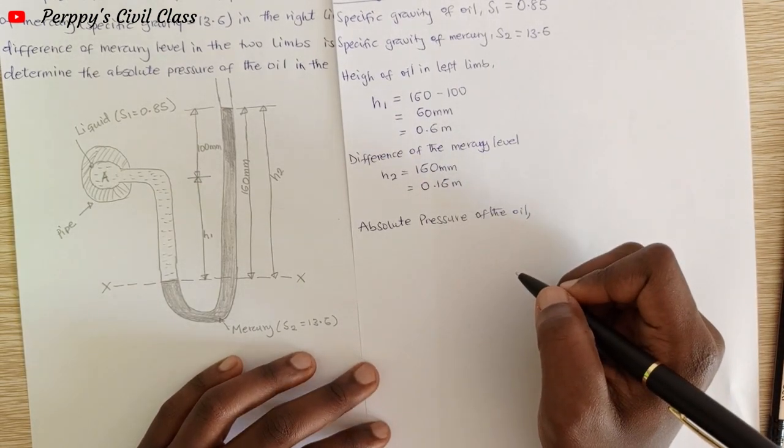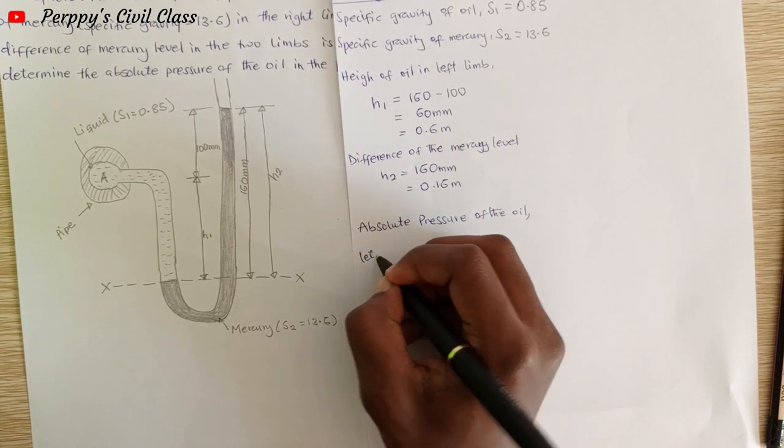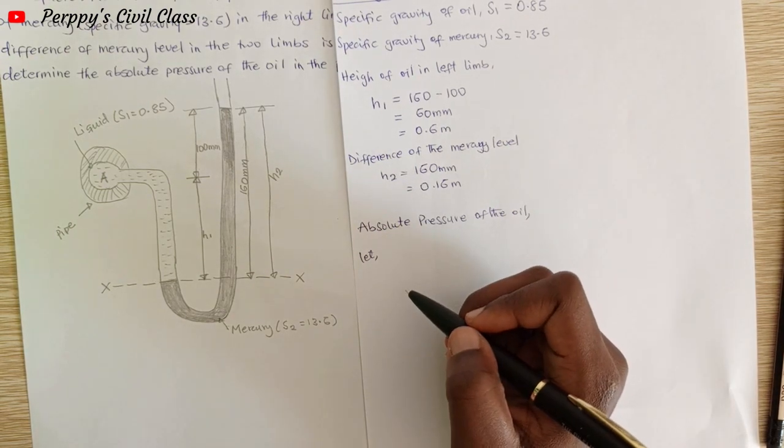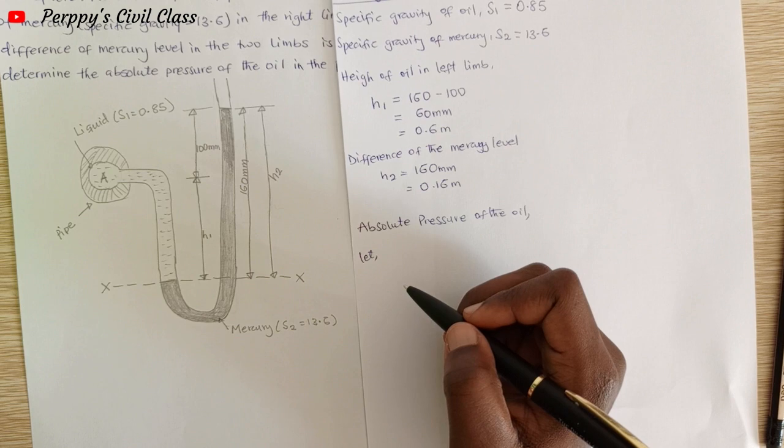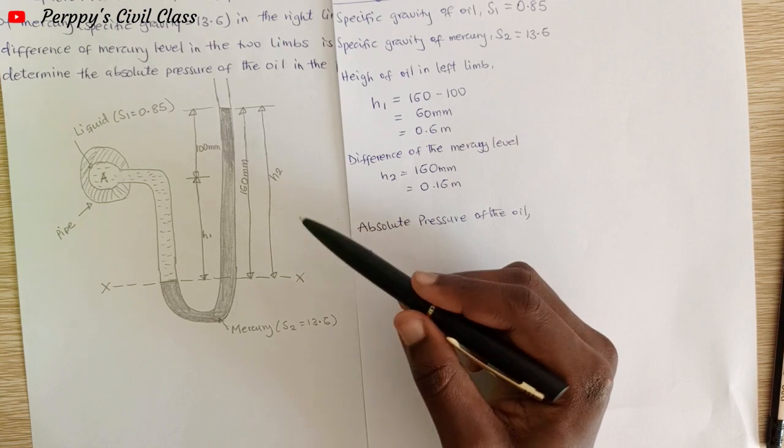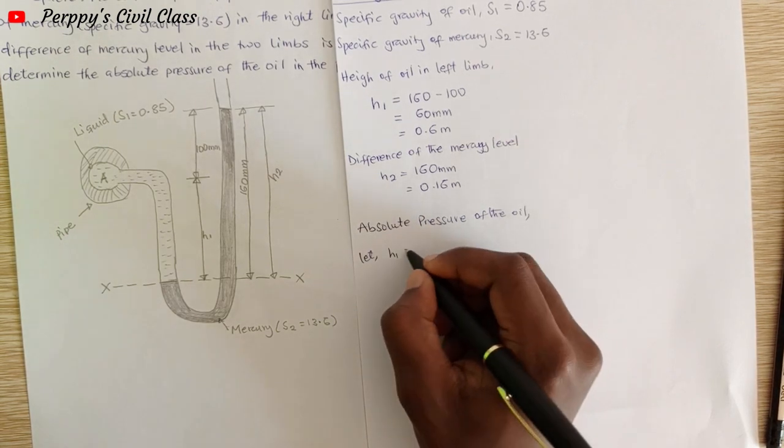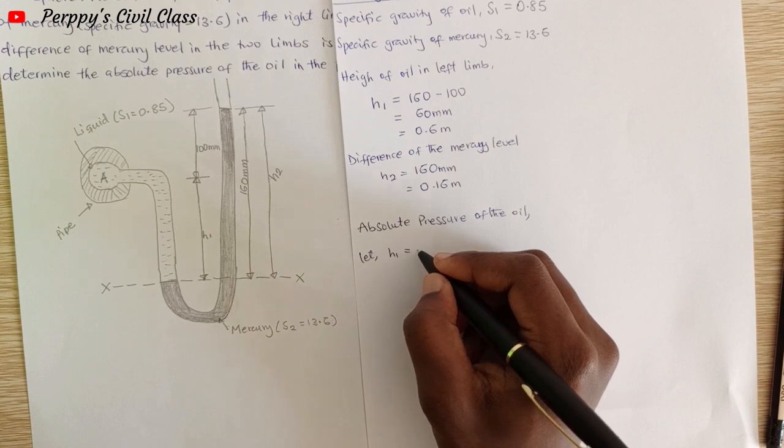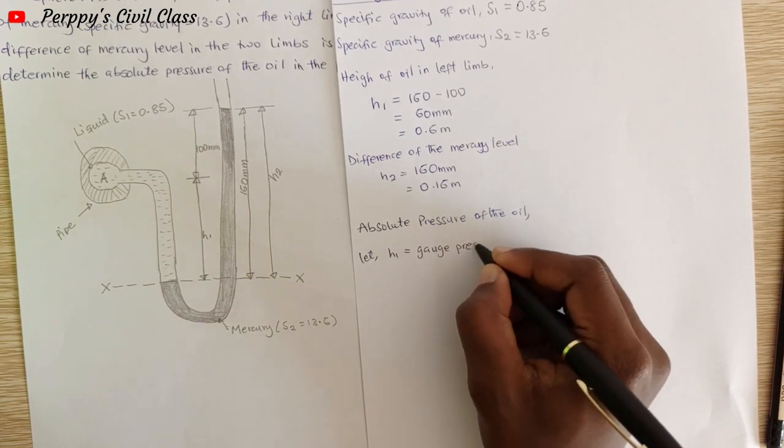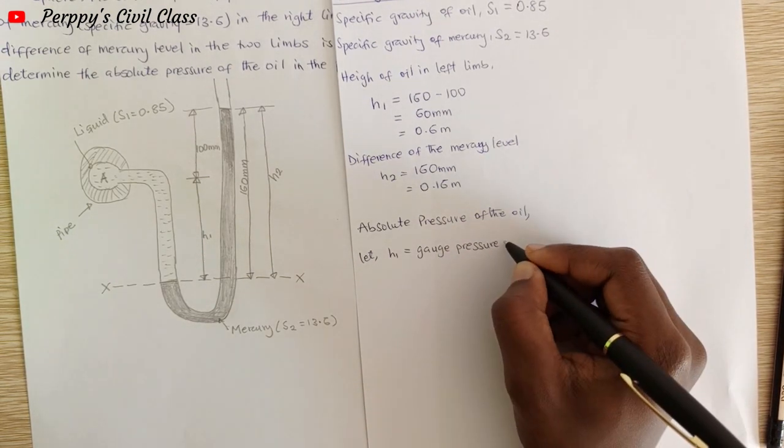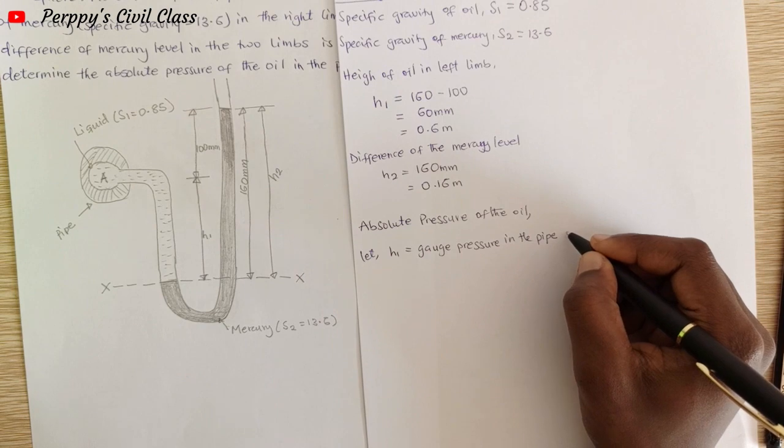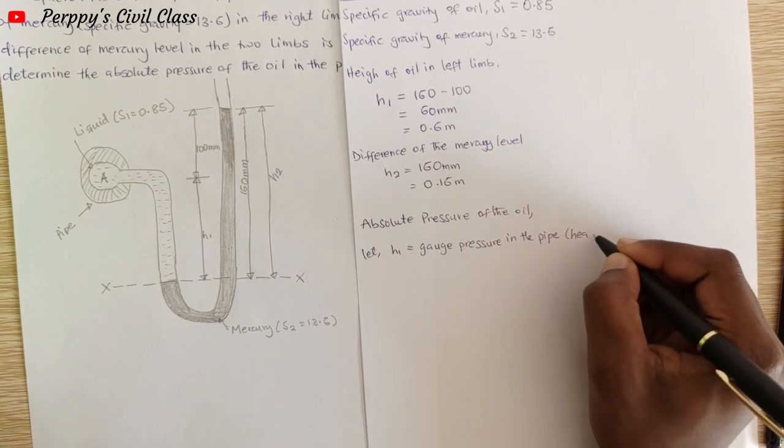Let h be the gauge pressure in the pipe in terms of head of water. Let P be the gauge pressure in terms of kilonewtons per meter squared.